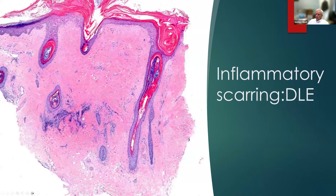Here's another case of inflammatory scarring alopecia — lupus. In lupus, we have loss of pilosebaceous units. In this case, we don't have an interface dermatitis, but we do have some perivascular inflammation, epidermal atrophy, and follicular plugging. Generally it's pretty easy to distinguish lupus from lichen planopilaris because lupus involves more than just the follicle — it usually involves the epidermis, there's usually some dispigmentation, and it's also perivascular.